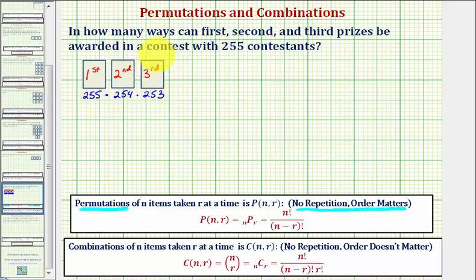So this product will tell us how many ways first, second, and third place prizes can be awarded if there are 255 contestants.